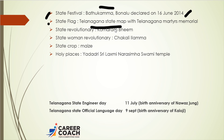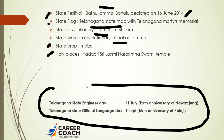The Telangana movement started since 1947. The main state revolutionary is Komaram Bheem, and the state woman revolutionary is Chakali Ailamma. The state crop is maize. Important holy places in Telangana are Yadadri Sri Lakshminarasimha Swami Temple, Vemulavada, and Kondagattu, with Yadadri being the most important. Two important days: Telangana State Engineers Day is celebrated on 11th July — birth anniversary of Nawab Jung — and Telangana State Official Language Day is 9th September — birth anniversary of Kaloji.